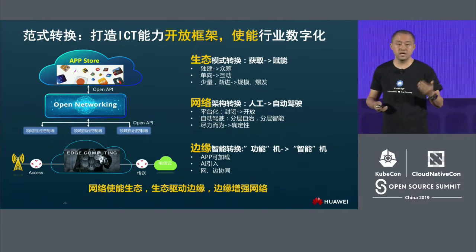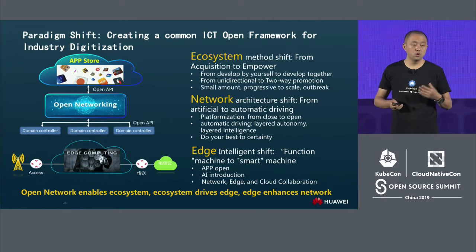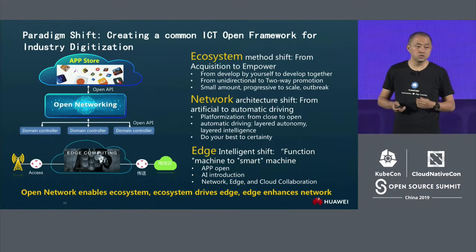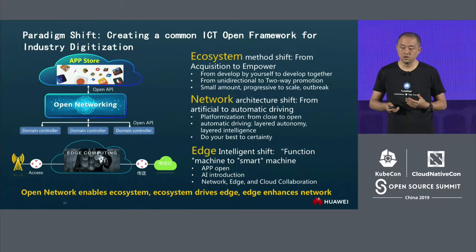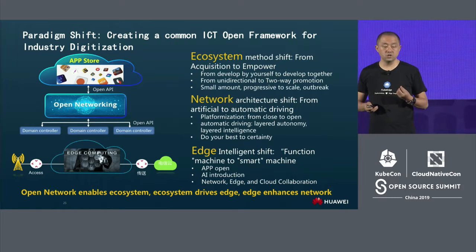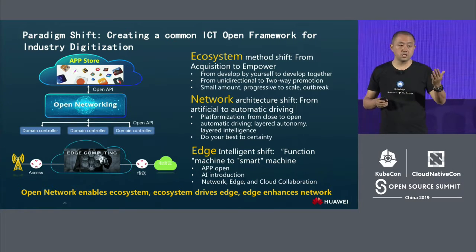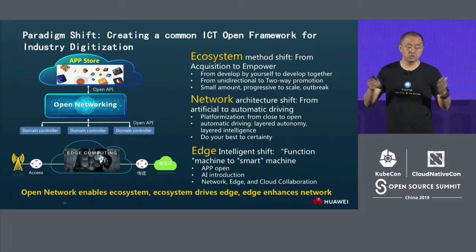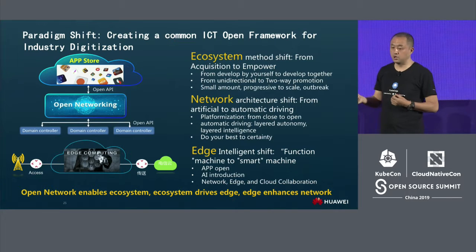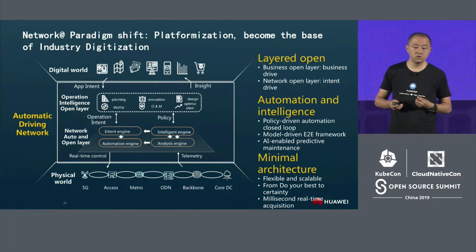There are three layers to this architecture. The first is the ecosystem layer — we need to change the development model and enable the ecosystem. The second is the middle layer, moving from manual work to automation. The third is the edge layer, which is the intelligent transformation — like feature phones changing to smartphones. With the network as enabling infrastructure, the ecosystem drives the edge, and the edge reinforces the ecosystem and network development.